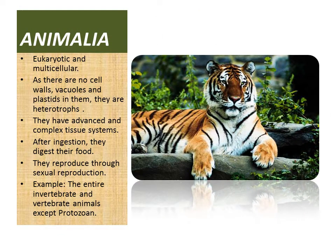Kingdom five is Animalia. They are eukaryotic and multicellular. Their cells have no cell walls, vacuoles, or plastids, making them heterotrophs — they depend on other organisms for food. A heterotroph is an organism that derives its nutritional requirements from complex organic substances.